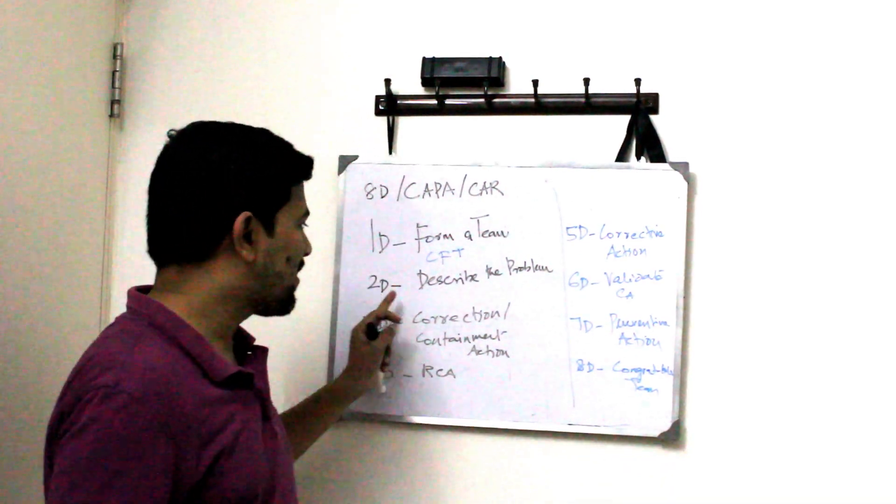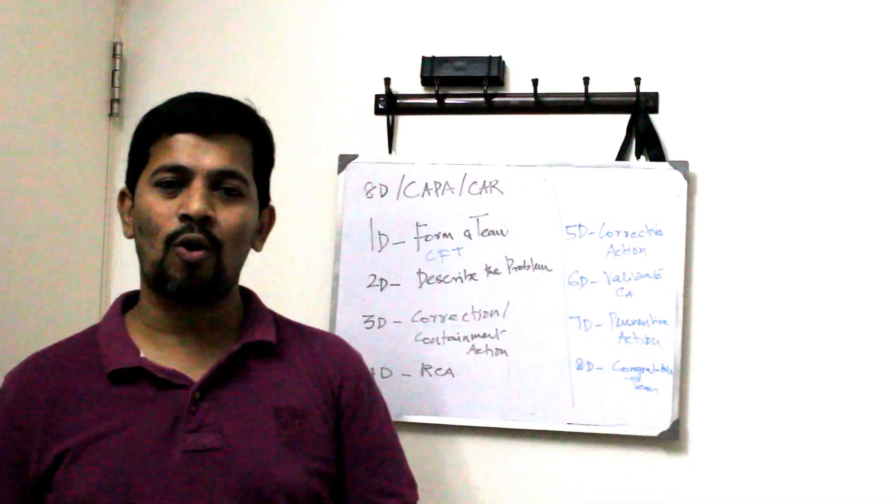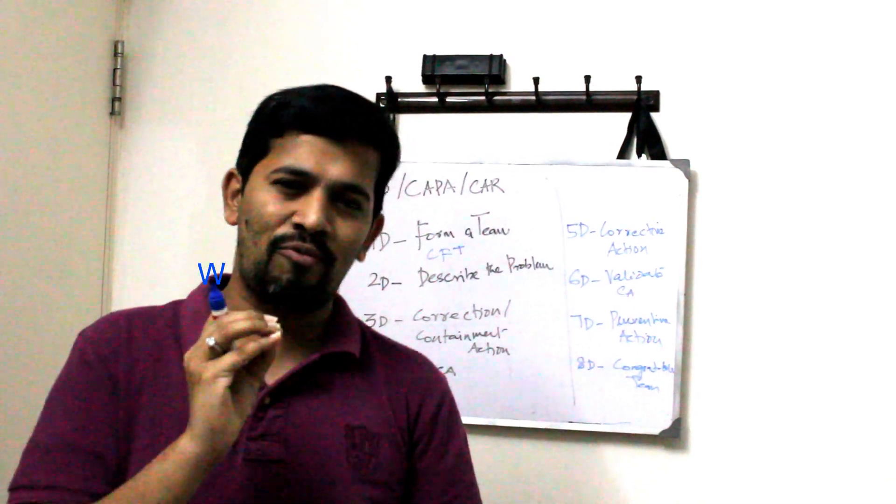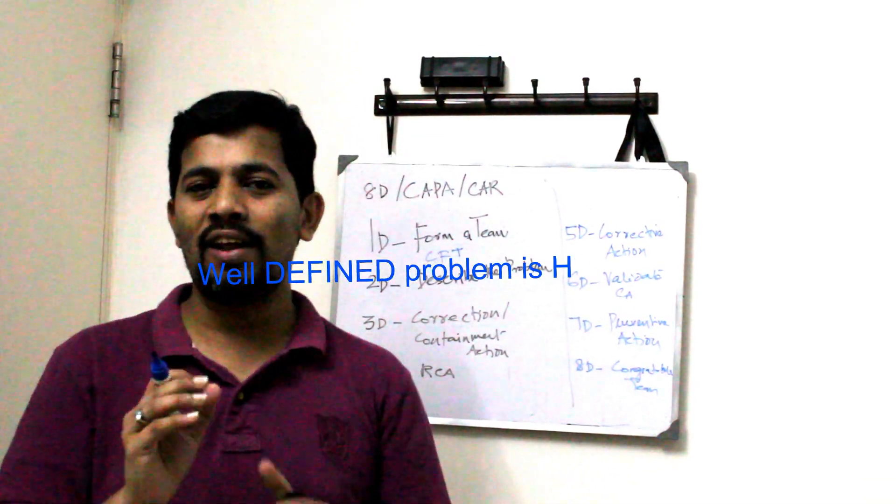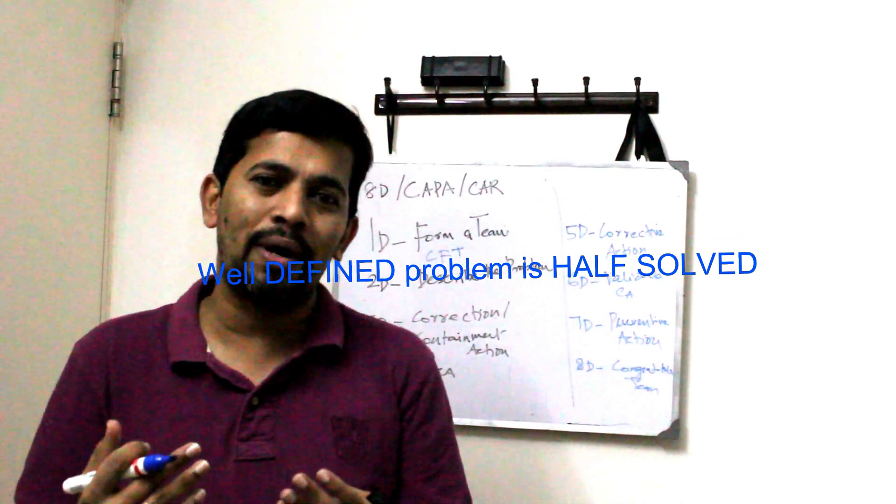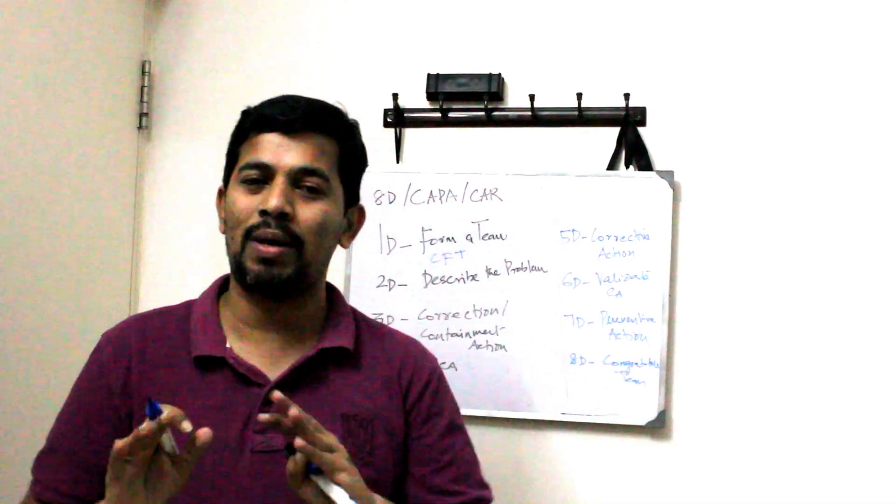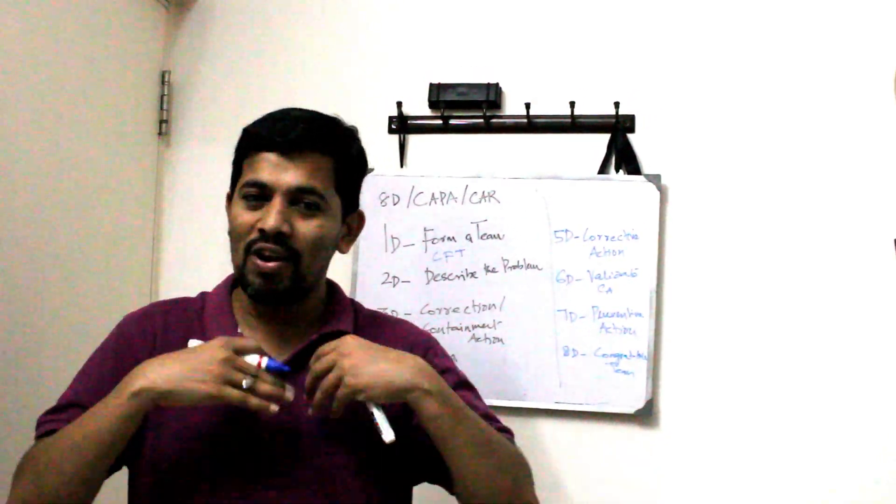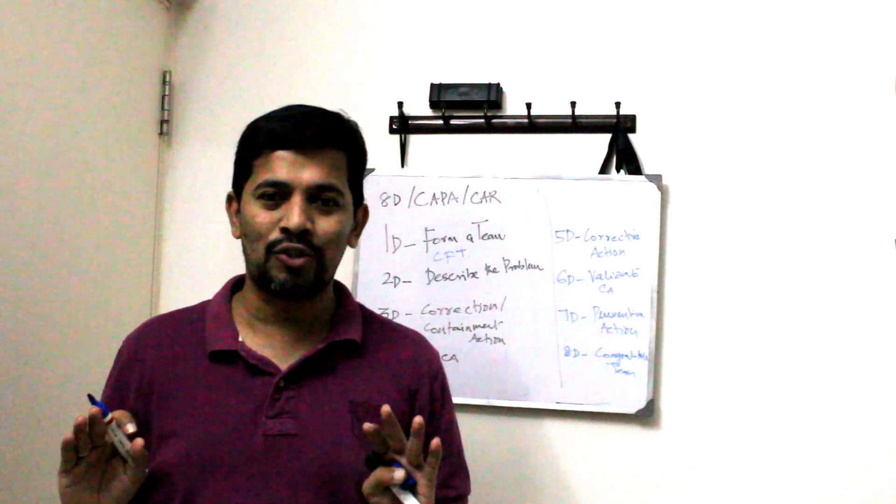And then the next D you have called describe the problem. So problem has to be described very well. It says that if the problem is being described that means half solved. If you are able to elaborate the problem, understand the problem, that means we are half solved. That means half we are already done towards the solutions.